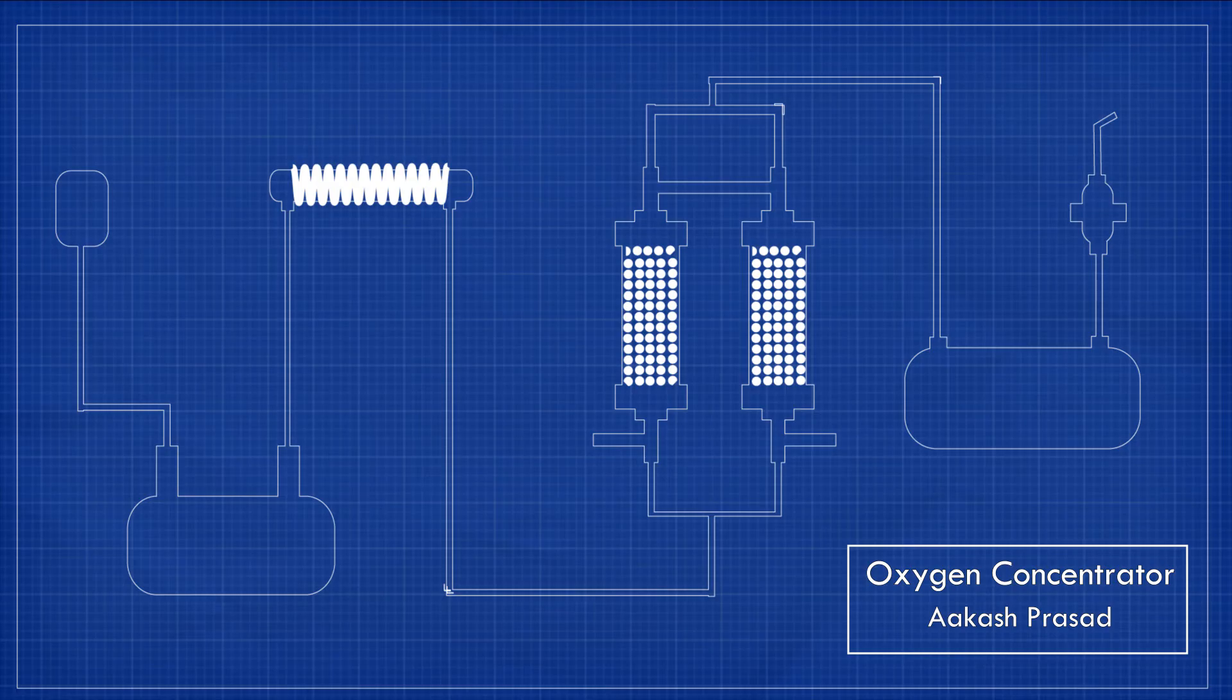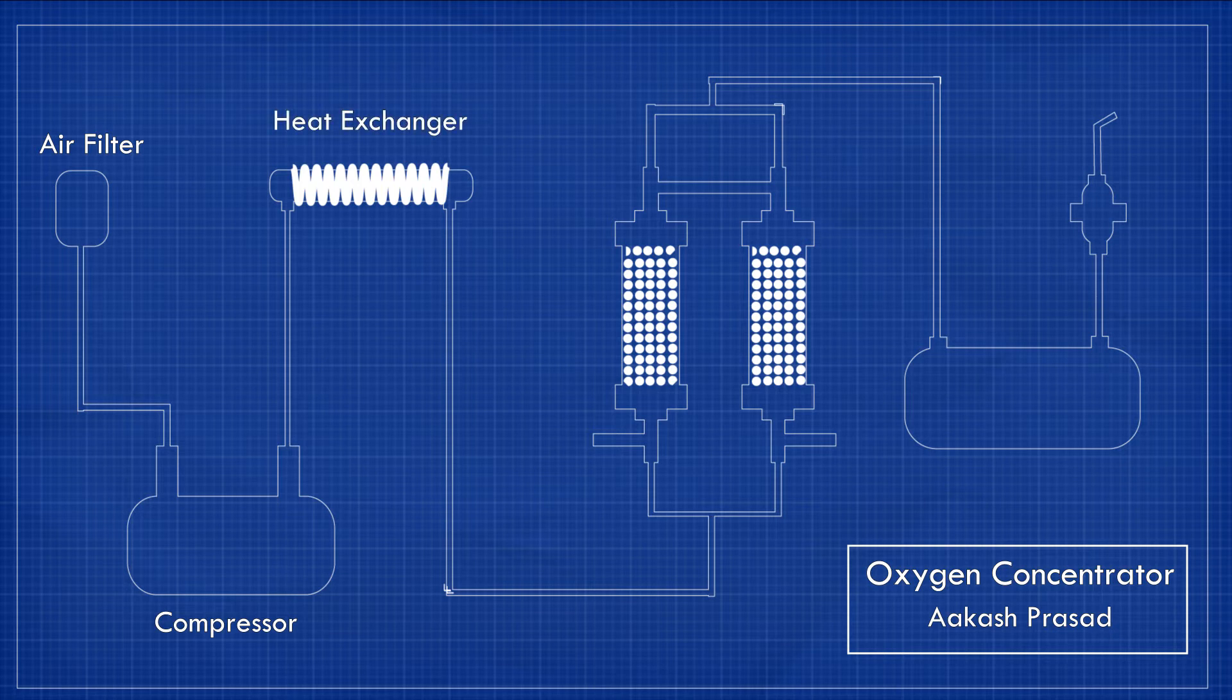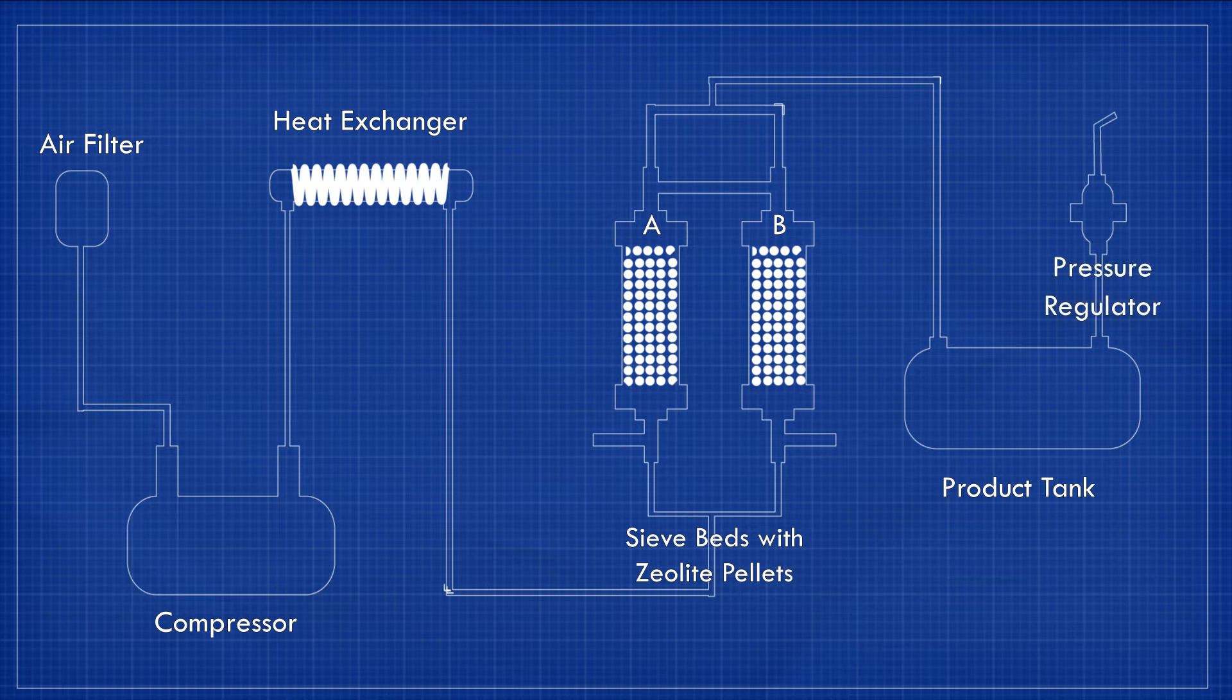The main components of a concentrator are air filter, compressor, heat exchanger, two zeolite sieve beds, product tank, and pressure regulator.